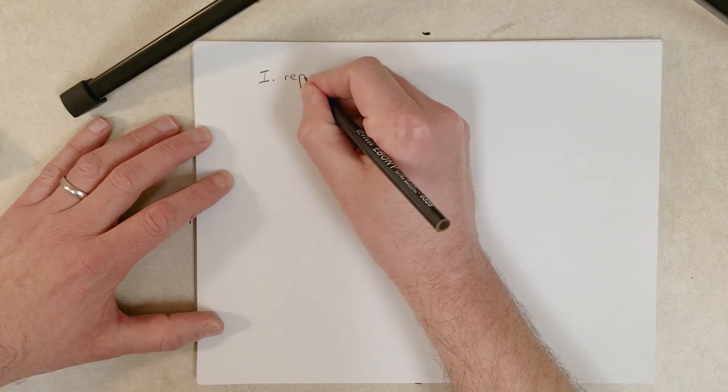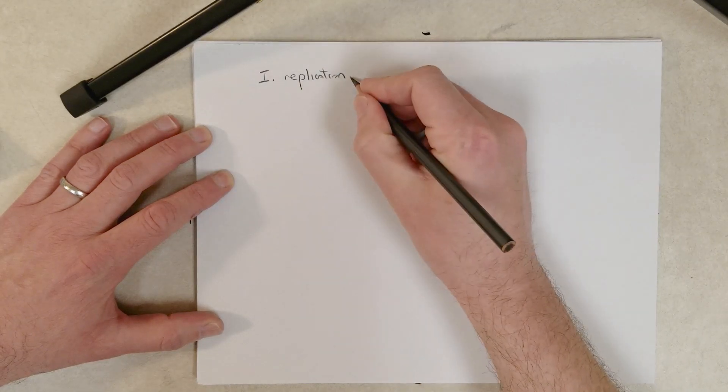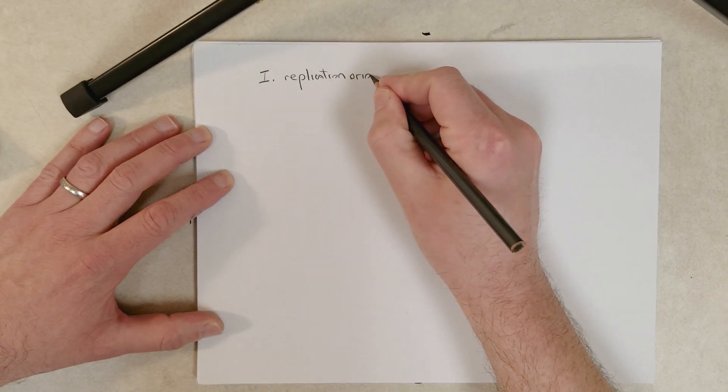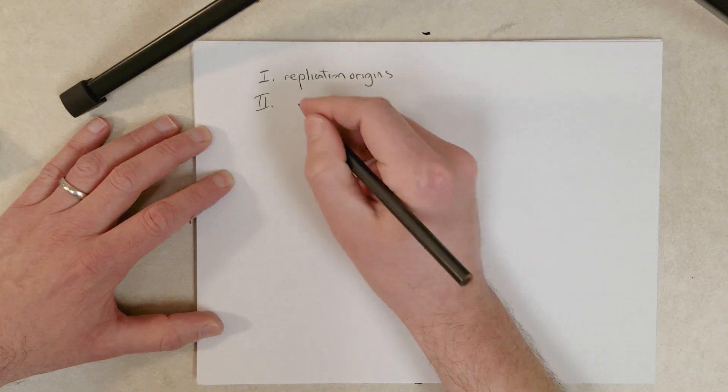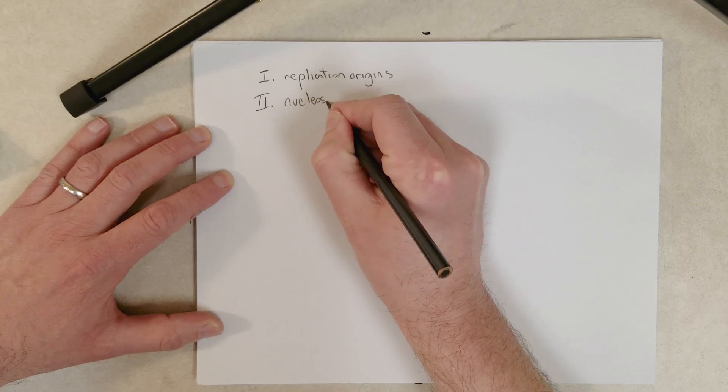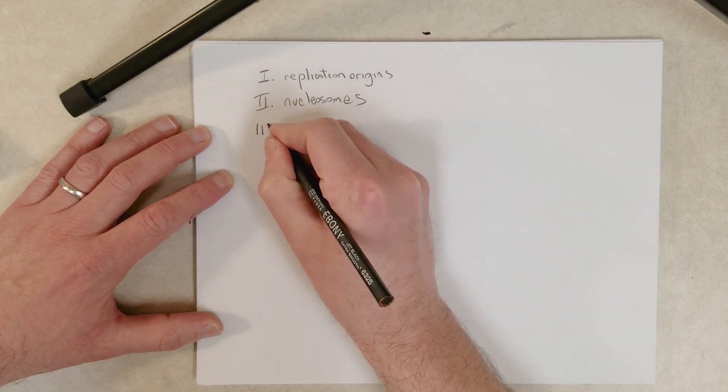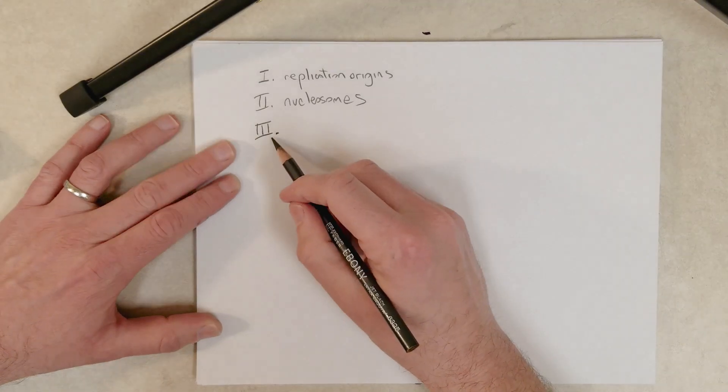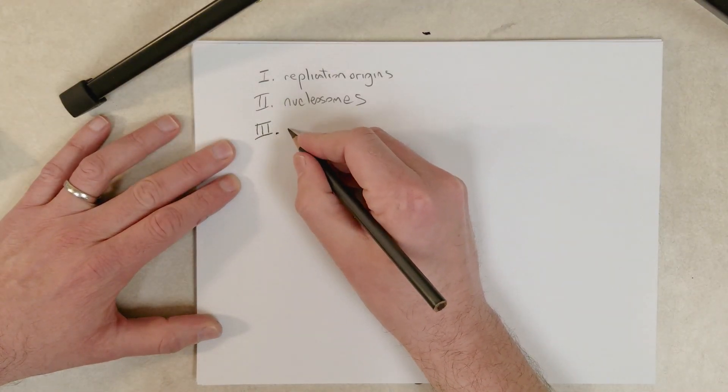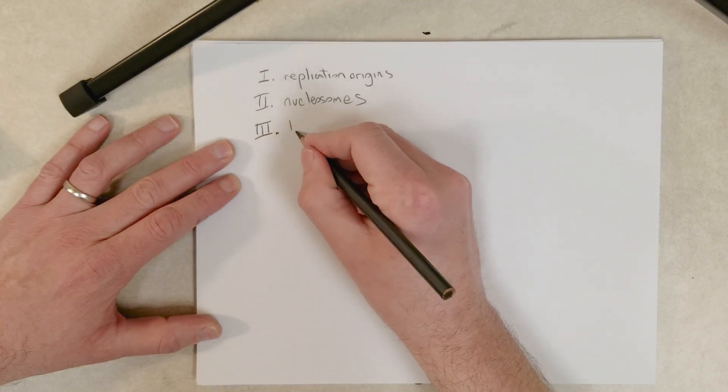So they are going to be dealing with replication origins. A second difference is going to deal with the nucleosomes, which are present in eukaryotes and not present in prokaryotes. And the third difference is going to deal with the fact that chromosomes in eukaryotes are linear.